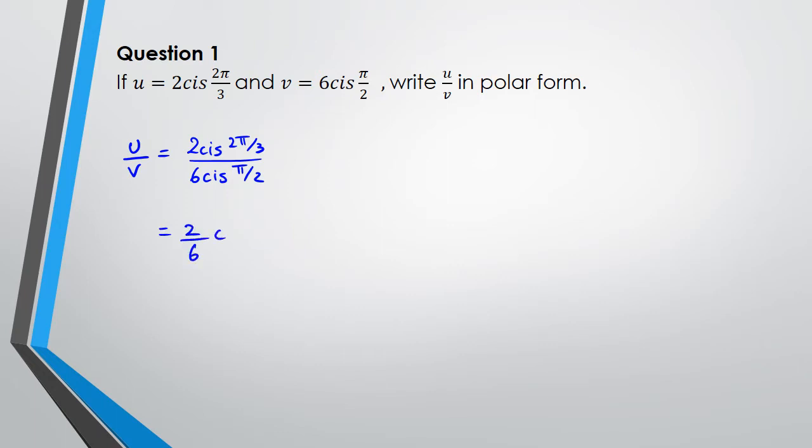This can be written as 2/6 cis (2π/3 minus π/2), so we have 1/3 cis, this is gonna be 4π/6 minus 3π/6, and so u divided by v could be written as 1/3 cis π/6.